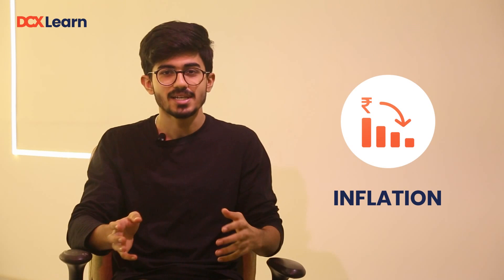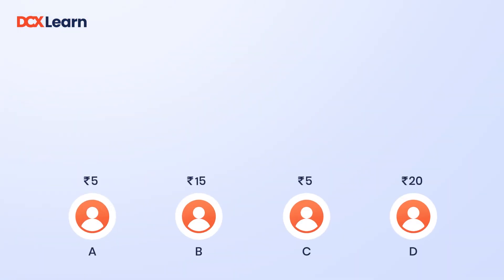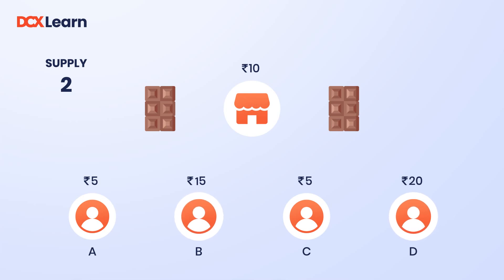That's not how it works. One of the main problems caused by printing unlimited money is inflation. Let me explain with a sweet example. Suppose there are four boys: Boy A has 5 rupees, boy B has 15, boy C has 5, and boy D has 20. They all want a chocolate worth 10 rupees. The shopkeeper has only two chocolates. As you can see, only boys B and D can buy the chocolate, as the other two have only 5 rupees and the chocolate is worth 10 rupees.